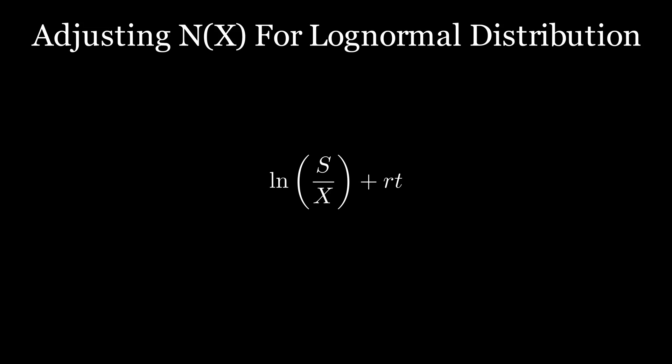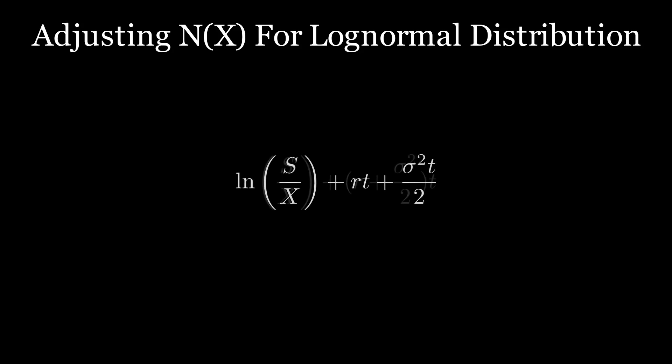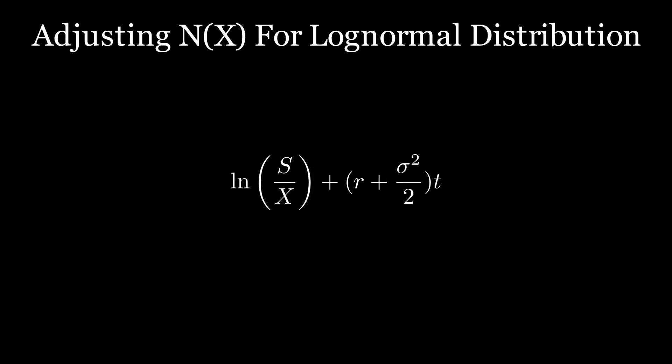In a log-normal distribution, stock prices are skewed with a longer right tail. This results in the mean of the distribution being shifted slightly to the right of the mode. The shift is mathematically equivalent to sigma squared times T divided by 2, where sigma is the volatility and T is time. Combining these adjustments — interest rates and volatility — gives us the numerator for D1 in the Black-Scholes model.